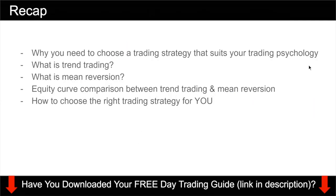Just a recap for today's video: I started by sharing why you need to choose a trading strategy that suits your trading psychology — basically trading is 80% psychology, so you need to get this right first, then move on to your trading strategy. I introduced trend trading, which is basically trying to catch the major trend in the market, and mean reversion, which is betting that price will revert back to the mean. I showed you the equity curves of both strategies so you understand what to expect — you must be able to accept how the equity curve will look before you even start trading. Finally, I went through some questions to help you choose the right trading strategy.